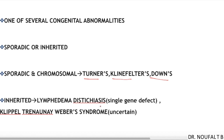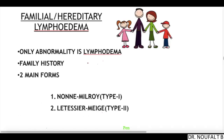Unlike syndromic, in familial lymphedema the only abnormality is lymphedema and there is a positive family history. There are two main forms: type 1 familial hereditary lymphedema — also known as Milroy disease — and type 2 familial hereditary lymphedema — also known as Meige disease.